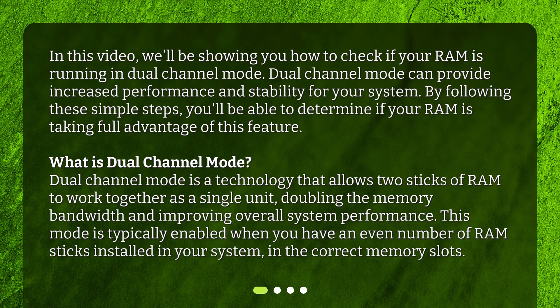What is dual channel mode? Dual channel mode is a technology that allows two sticks of RAM to work together as a single unit, doubling the memory bandwidth and improving overall system performance. This mode is typically enabled when you have an even number of RAM sticks installed in your system, in the correct memory slots.